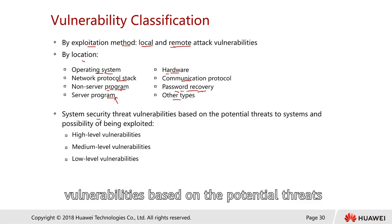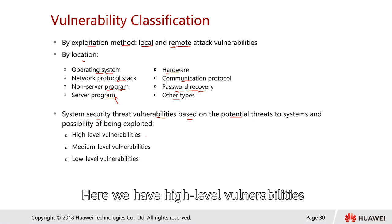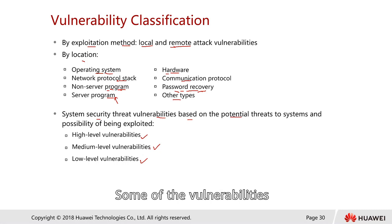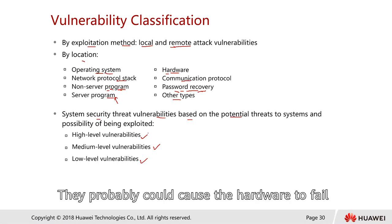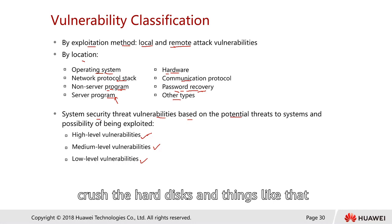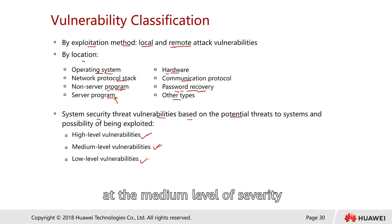System security threats and vulnerabilities are classified based on the potential threat and the possibility of being exploited. There are high, medium, and low-level vulnerabilities. Some high-level vulnerabilities are quite damaging — they could cause hardware to fail, cause a system to overrun, crash hard drives, and so on. Some vulnerabilities are at a medium level of severity, and some are just low level.